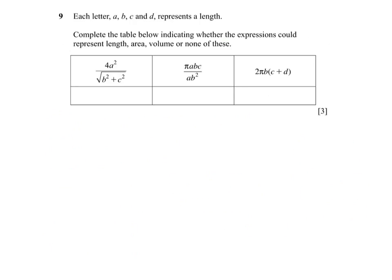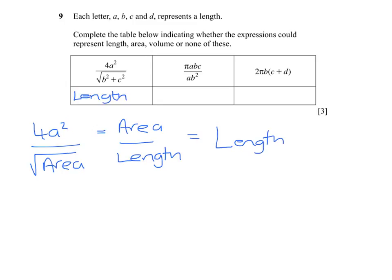Each letter represents a length. So if we look at the first term, we have 4a squared. We can ignore the 4 that is dimensionless, which means we have an area on the top. And on the bottom we have an area plus an area, so the square root of an area, and that is a length. If we divide an area by a length, then we end up with a length.